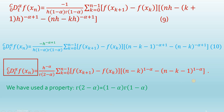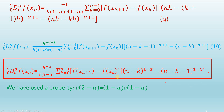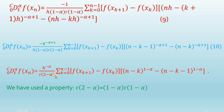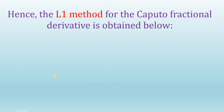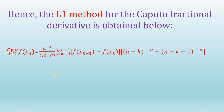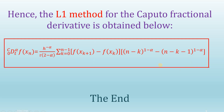In the red-highlighted equation I have also used a property of the gamma function: the factor (1 minus alpha) times Gamma(1 minus alpha) is written as Gamma(2 minus alpha). So the L1 method for the Caputo fractional derivative has been obtained and is now highlighted in red on screen.